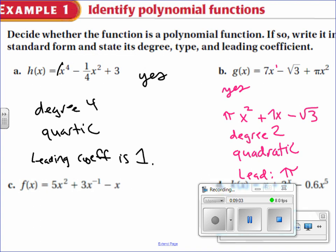We'll just look at c real quick since it's right here. C is going to be a no. Do you know why? What breaks the rule? It's this guy. Negative one is not a whole number. Whole numbers are zero, one, two, three, four, five...